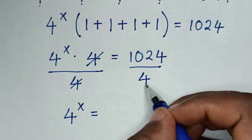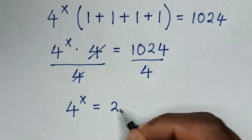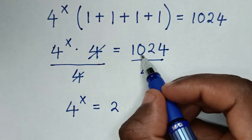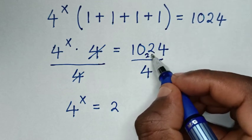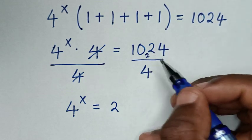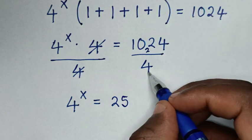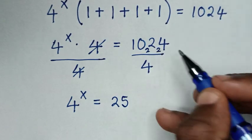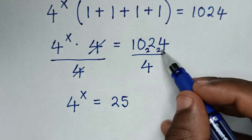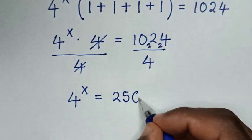10 minus 8 is 2. So here it will be 22. 22 divided by 4, so it will be 5, whereas 5 times 4 is 20. So 22 minus 20 will be left with 2. Then it will be 24 divided by 4, which is 6.